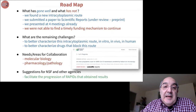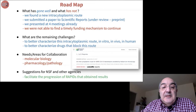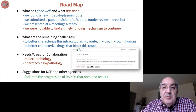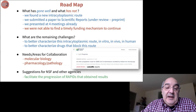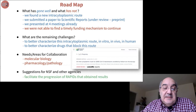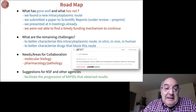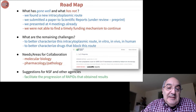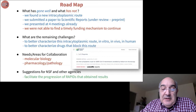We are seeking collaboration to better characterize the tunneling nanotube route and test existing or new drugs against it. We need help in molecular biology, pharmacology, and pathology. We have a paper in preprint at Scientific Reports and have presented at meetings. However, we have not been able to find continuation funding for this research, and our RAPID grant ends in April. Not having a clear way to continue the research is uncomfortable.